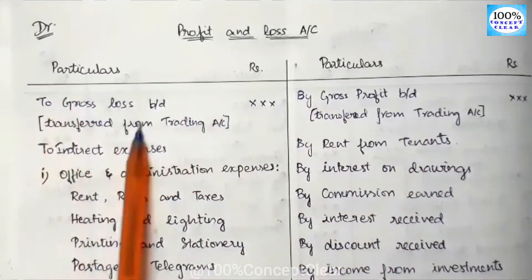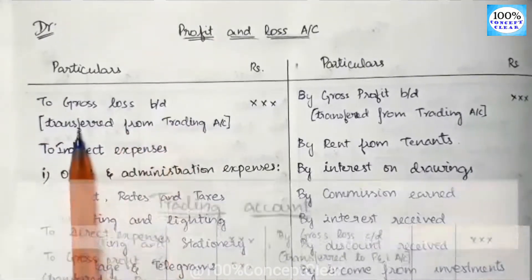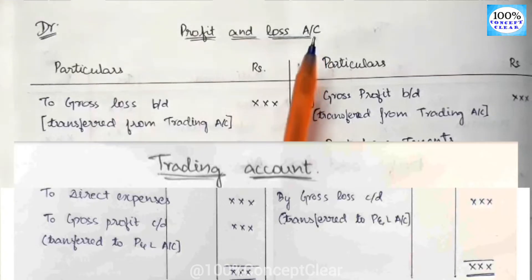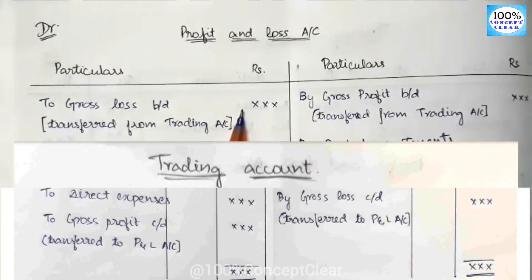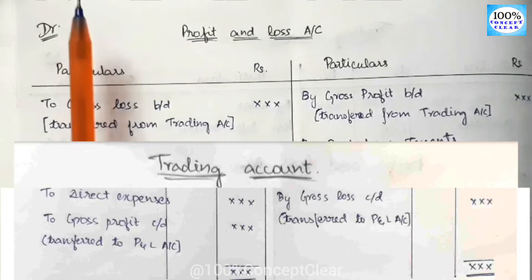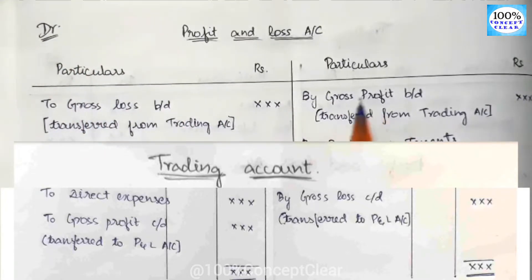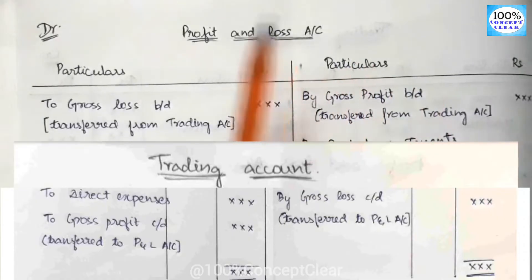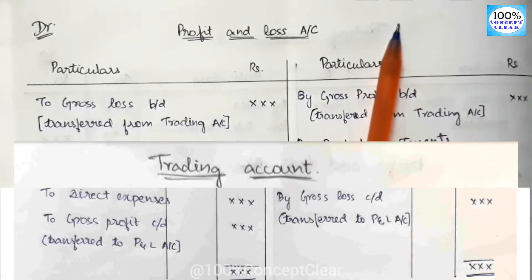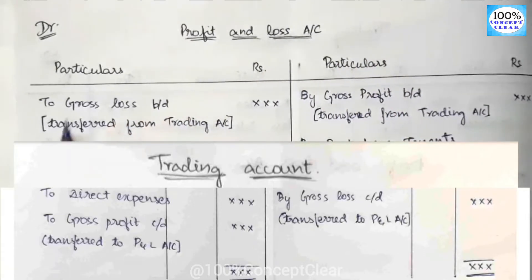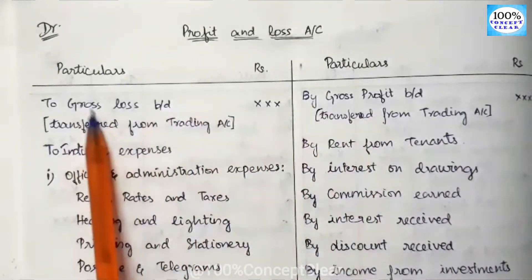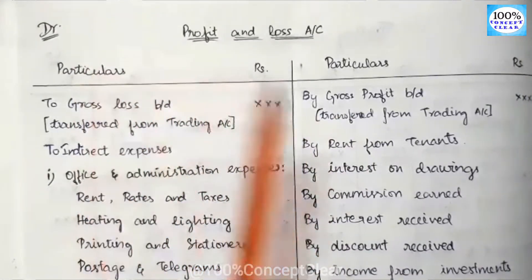On the debit side, the first item is gross loss brought down — transferred from the trading account. When we open a P&L account, we transfer the answer from the trading account. By gross profit brought down, we transfer it to the P&L account. We will transfer two gross loss brought down, and we will transfer the sum as gross profit or gross loss.